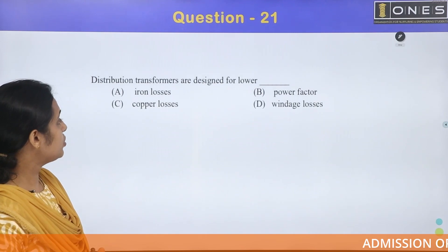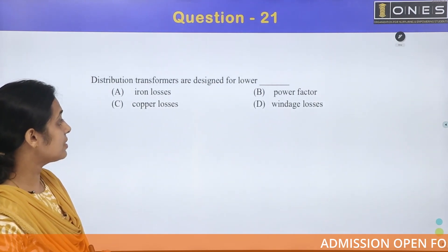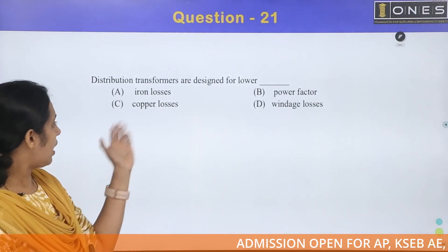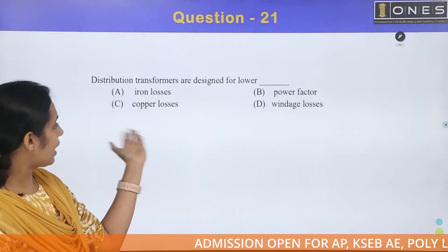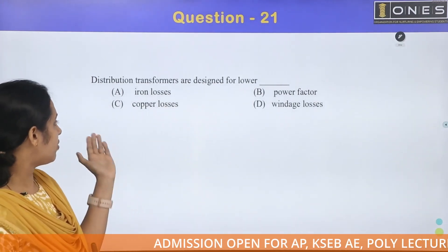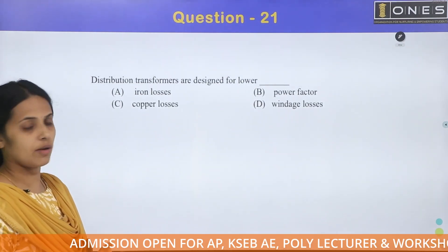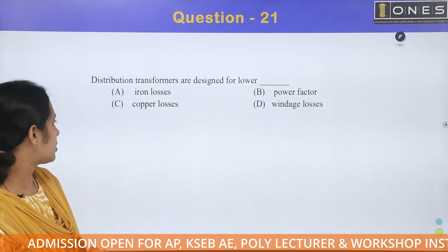First question: distribution transformers are designed for lower iron loss, lower power factor, lower copper loss, or lower vintage loss. That is the question.